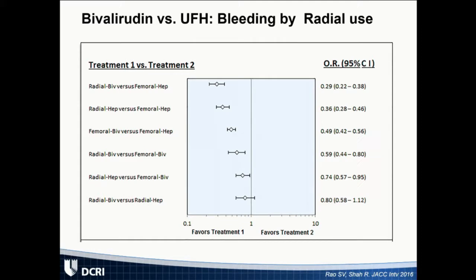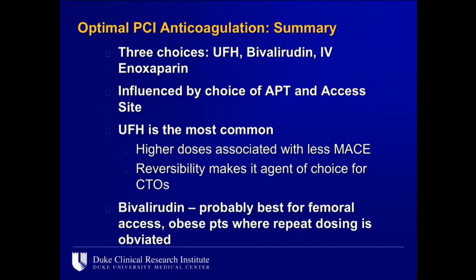Regarding access site: a meta-analysis we wrote suggests that the combination of radial access plus bivalirudin may yield the best safety profile — radial addressing access-site bleeding and bivalirudin addressing non-access-site bleeding. However, bivalirudin use among the radial community is quite low today. To summarize: there are three choices in the cath lab — unfractionated heparin, bivalirudin, and IV enoxaparin, which is not widely used. The choice is influenced by antiplatelet therapy and access site. Unfractionated heparin remains the 800-pound gorilla — higher doses reduce ischemic complications and its reversibility makes it the agent of choice for CTOs. Bivalirudin in contemporary practice is reserved for femoral access or very large patients where repeated UFH redosing to maintain therapeutic ACT is impractical.